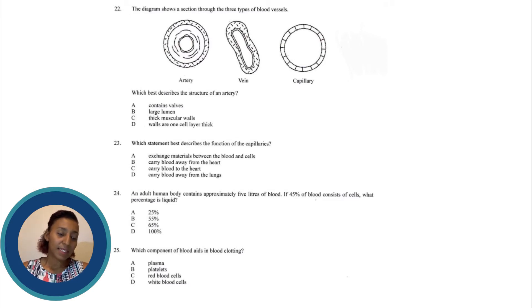Let's look at D. It says walls are one cell layer thick. Well if you look at the diagram you can see that that is not so. The capillaries are actually the blood vessels with walls that are only one cell layer thick. And the arteries have a very thick outer wall which are many cell layers thick. So it's not D. The answer then must be C. Arteries have a thick muscular wall.